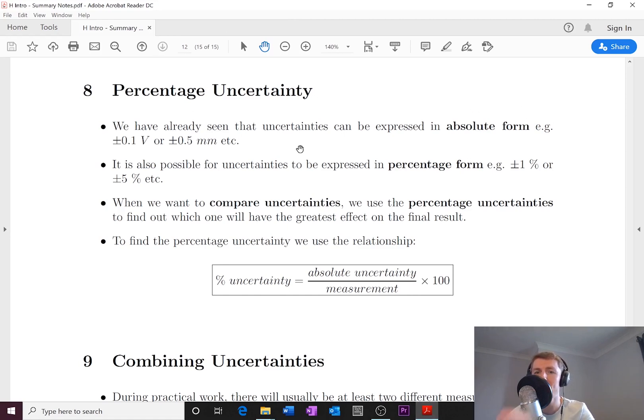For example, you could have a voltage reading of 10 volts plus or minus 0.1 volts, or for example 5 millimeters plus or minus 0.5 millimeters.